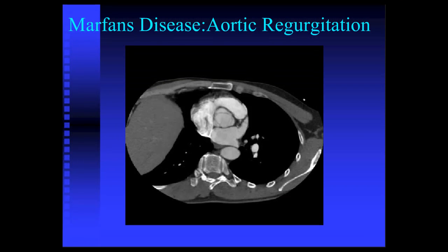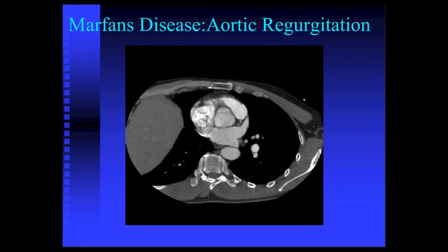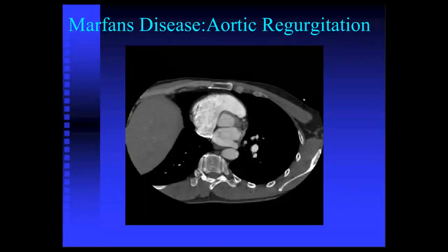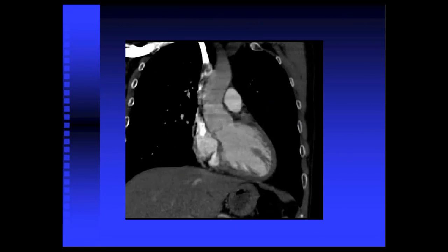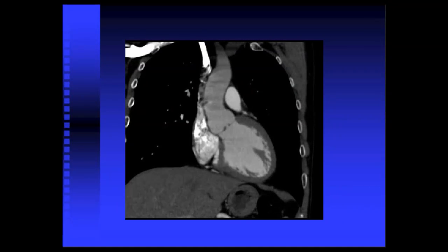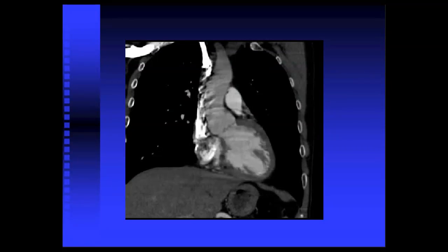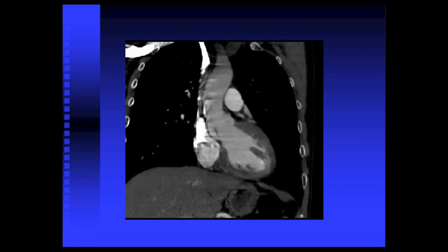While we can understand stenosis, we can also get insight into regurgitation. In this patient with Marfan's disease, the area of coaptation that should be closed shows a triangular opening — the valve does not completely coapt. This correlates with aortic regurgitation and insufficiency. Because of the spatial resolution and gating technology, we can see this fairly subtle finding: the leaflets are not completely coapted, which correlates with aortic insufficiency.